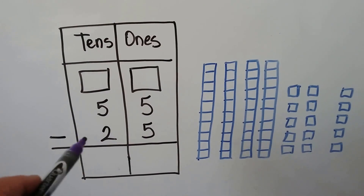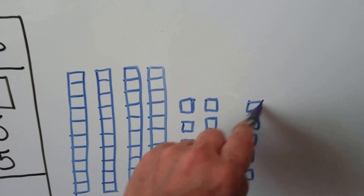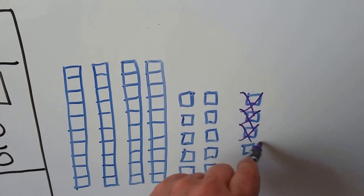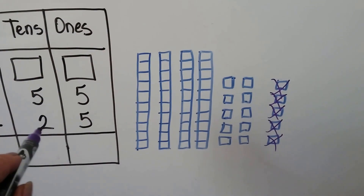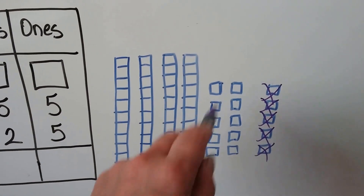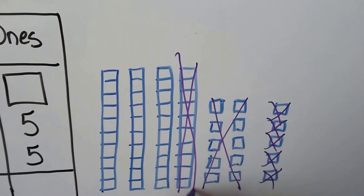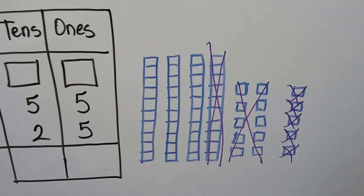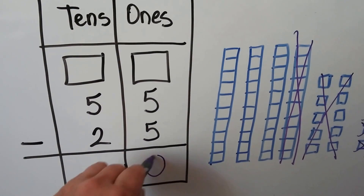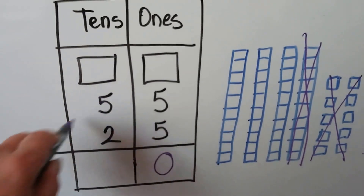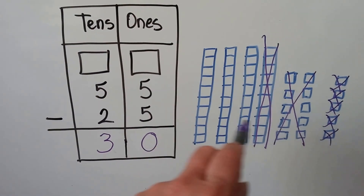So we need to take away twenty-five. We take away five ones — one, two, three, four, five. Now we need to take away the two tens. We take away one ten and the other ten. We're left with three tens. We did five take away five, and that gave us zero. And we did five take away two, and that gave us three. We have three tens. It worked.